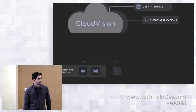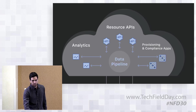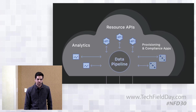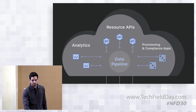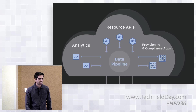Inside CloudVision, a couple of things are happening. We have a data pipeline — one of the core NetDL components — and a variety of processes doing interesting things with this data: calculating events, aggregating data, normalizing it. We have provisioning and compliance applications for ensuring devices are running the correct configuration and upgrading software. And then we expose this data via a variety of APIs.